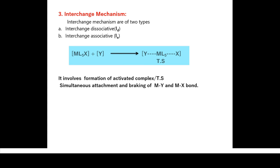In summary, this lecture covered: what is substitution reaction, types of intermediate formation during SN1 and SN2, and the three mechanisms — SN1, SN2, and interchange — for substitution in octahedral complexes. In the next lecture, we will see evidences supporting the dissociative (SN1) mechanism, including acid hydrolysis and base hydrolysis reactions. Thank you.